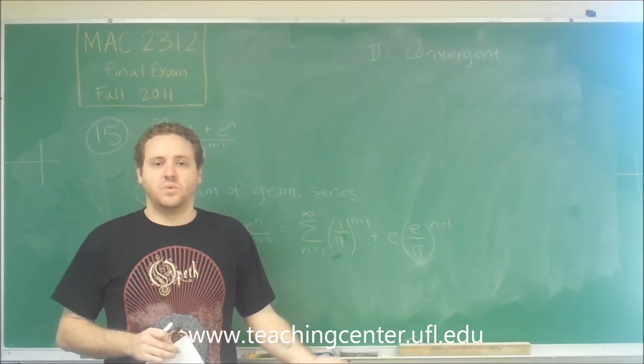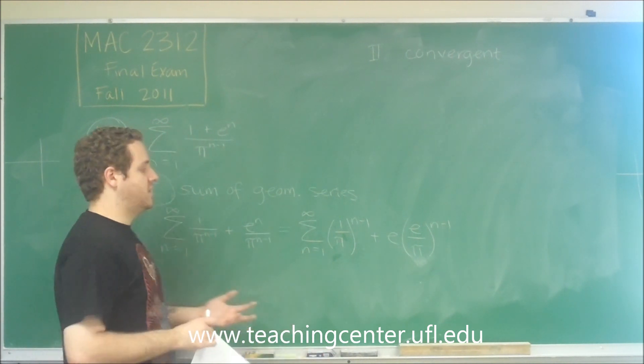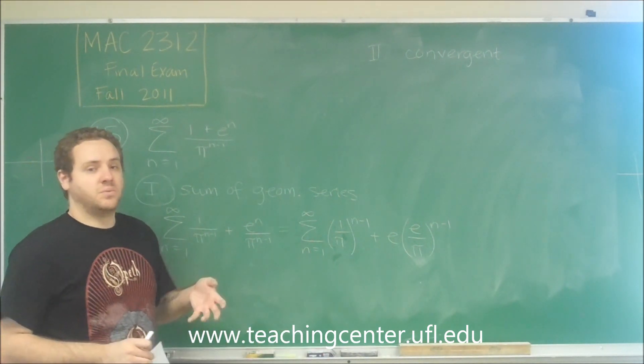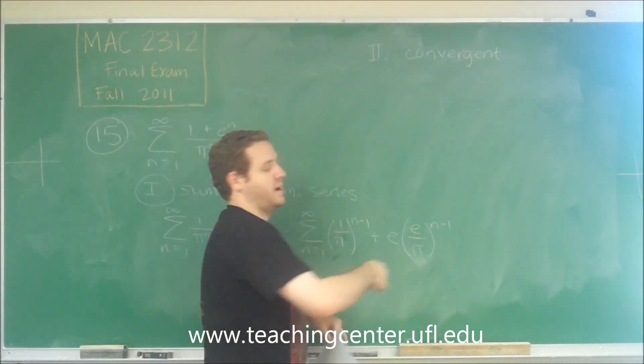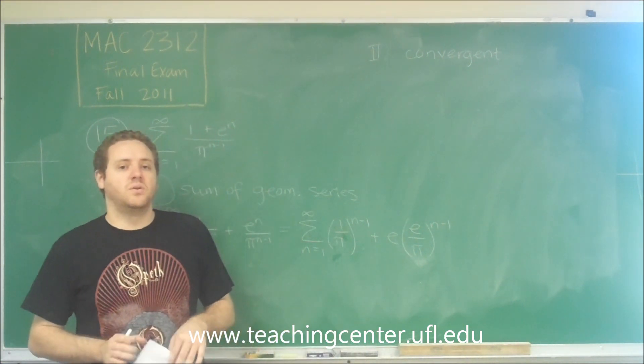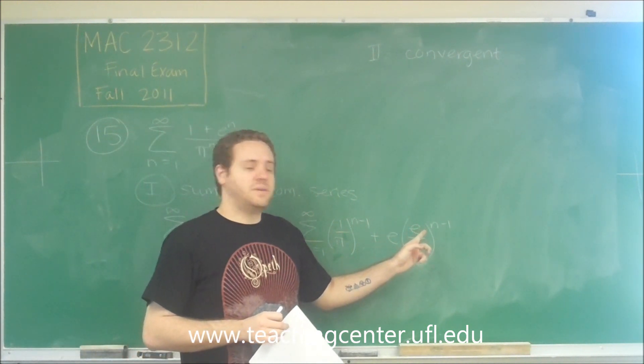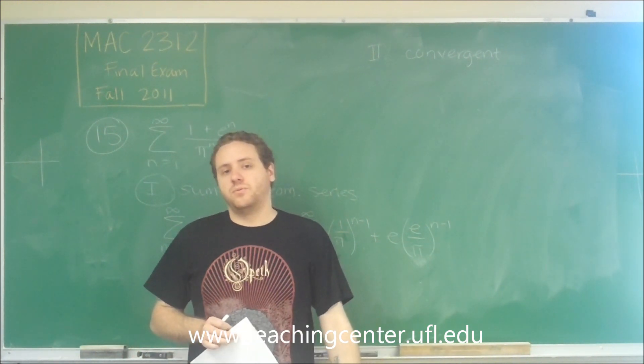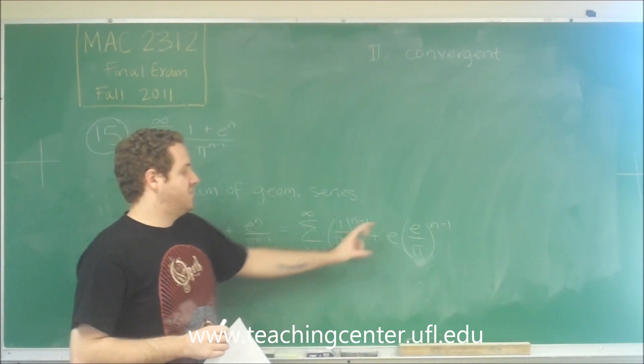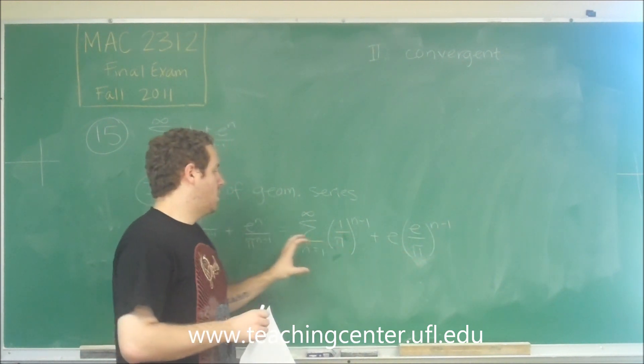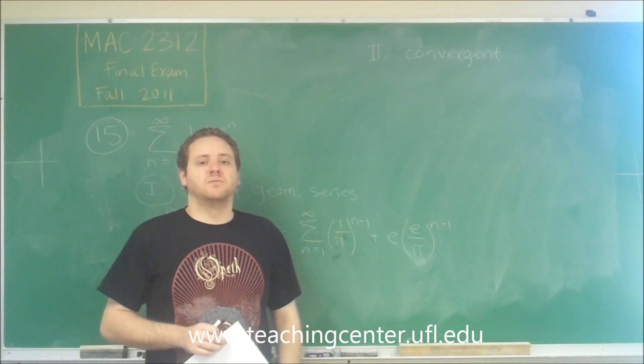1 over pi, definitely that's 1 over 3.14, etc. That's clearly less than 1. e over pi, this just requires that you know the approximate decimals of these numbers. e is about 2.7, pi is about 3.14. So again, this fraction is smaller than 1. So both of these geometric series are convergent.